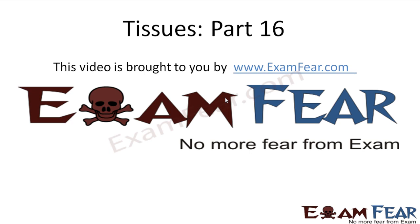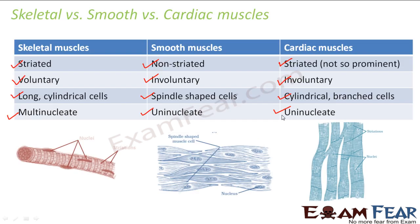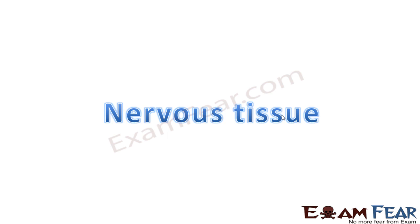Hello friends, this video on tissues part 16 is brought to you by examfear.com. No more fear from exam! So this was a comparison between the three types of muscle tissue, and I think with this we have ended our discussion on muscular tissue. The next topic we are going to discuss is the last type of animal tissue, which is going to be nervous tissue.